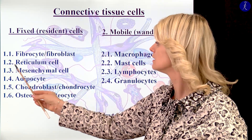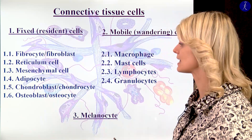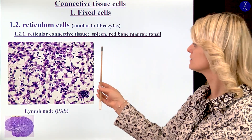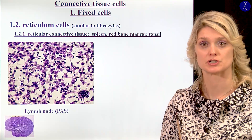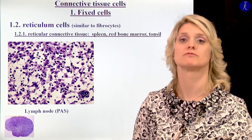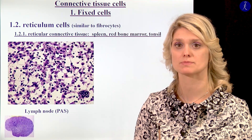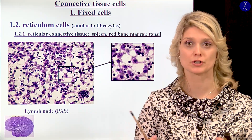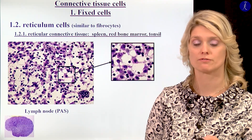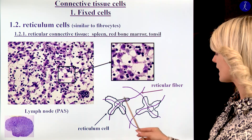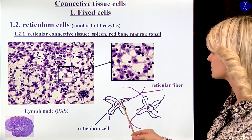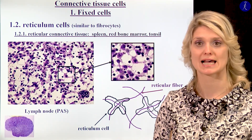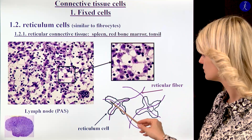The next point within the fixed cells: these are the reticulum cells. We can find the reticulum cells within the reticular connective tissue. They have the same function as the fibroblasts — they produce the fibers and the ground substance. The special reticular connective tissue is a special meshwork consisting of reticular fibers. And between the reticular fibers at the cross points, we can see these special reticulum cells with processes which will cover the fibers.